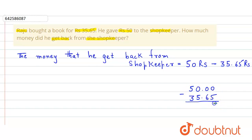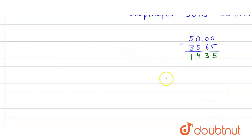So 10 minus 5 equals 5. This 10 gives one carry to the next number, making it 9. So 9 minus 6 equals 3. Then here it is 0 and again it will be 9, so 9 minus 5 equals 4. Then 4 minus 3 equals 1. So when we subtract these two numbers we get 14.35 rupees.